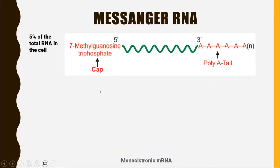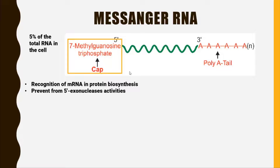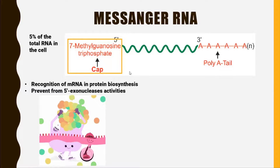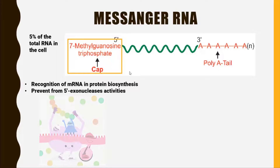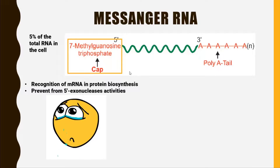Now the structure of Messenger RNA. On the 5' end, as we can see, the 7-methylguanosine triphosphate is present, and it is also called the CAP of Messenger RNA. The function of this CAP is to give recognition of Messenger RNA in protein biosynthesis and to prevent 5' exonuclease activity. This exonuclease cannot degrade the Messenger RNA from the 5' end.